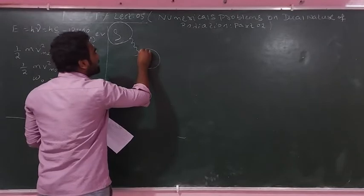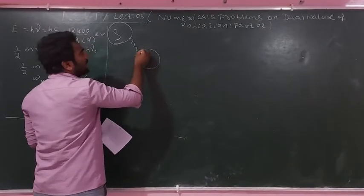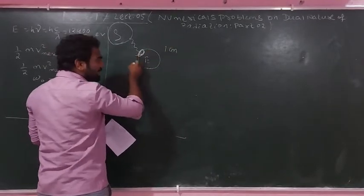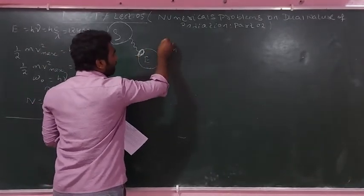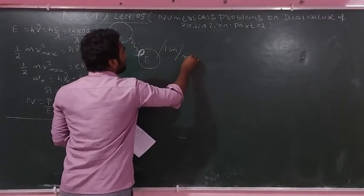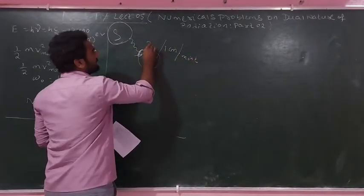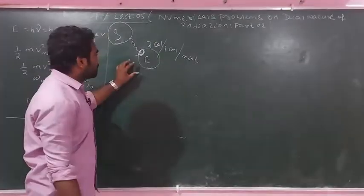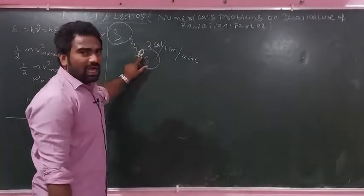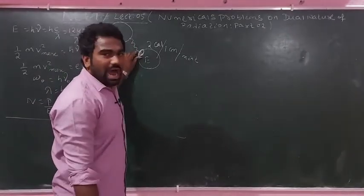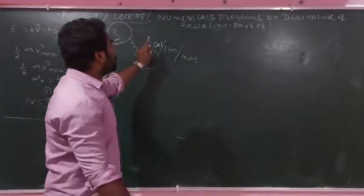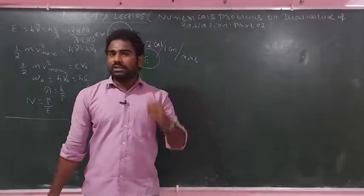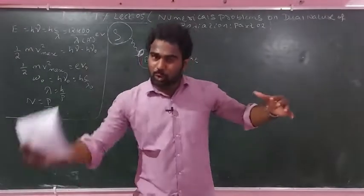The Earth's surface, in 1 centimetre square area, receives 2 calories of heat per minute from the sun. The question asks: when the sun radiates heat, how much energy is absorbed per centimetre square per minute?